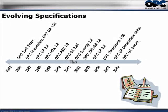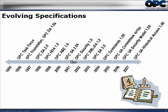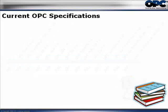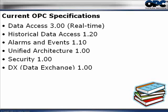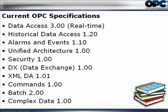Starting in 1996 with the OPC Data Access 1.0 specification, they've progressed all the way through Historical Data Access, Alarms and Events, and in 2005 work began on the OPC Unified Architecture specification. The most recent specifications include OPC Data Access 3.0, Historical Data Access 1.2, and Alarms and Events 1.1.